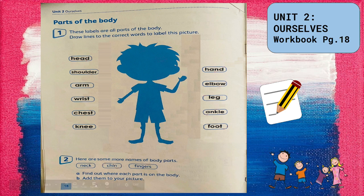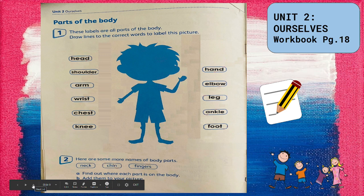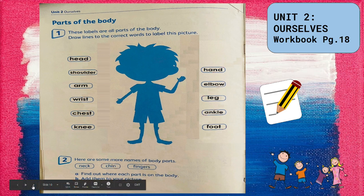Now look at the picture. These labels are all parts of the body. We will draw lines to the correct words to label this picture. Where is the head? Draw a line to the head. How about the shoulder? Can you draw a line to the arm? Now how about the wrist? Can you draw a line to the wrist? And where is the chest? The chest is near the heart.